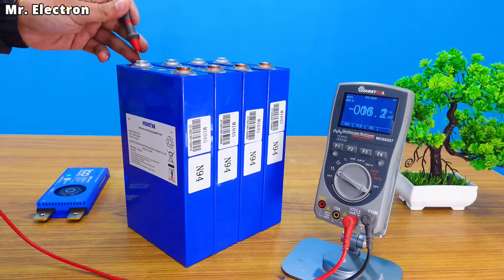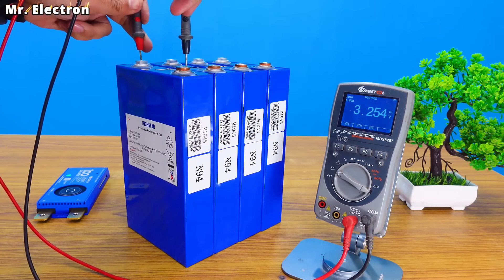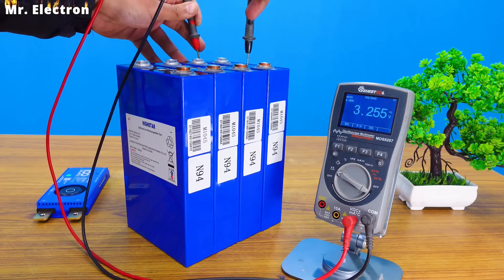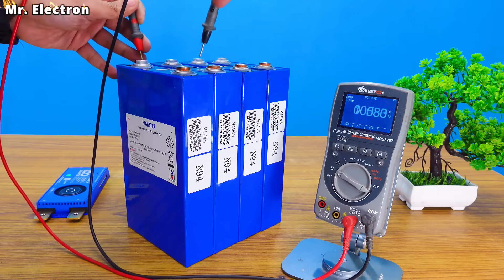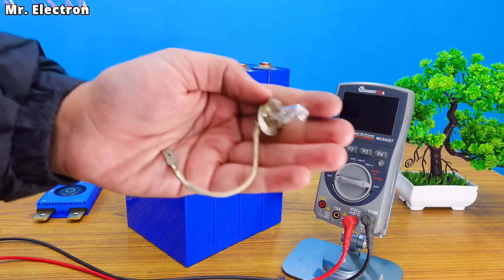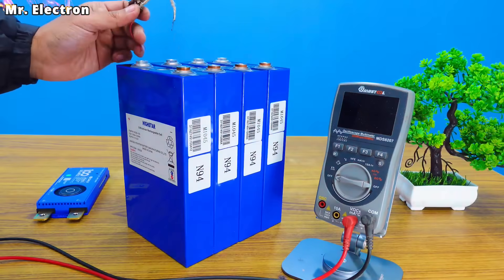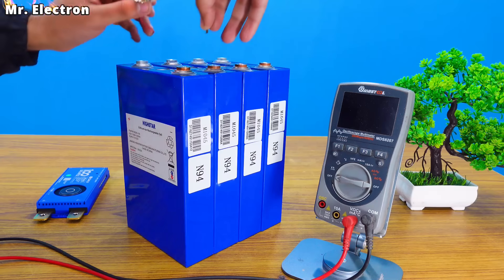So here I'm going to test the battery voltage. 3.254. Next 3.255. Next 3.255. And the last one 3.255. So the battery cells are completely balanced. And finally let's use my 55 watts car headlamp to do the final check. Yes working.